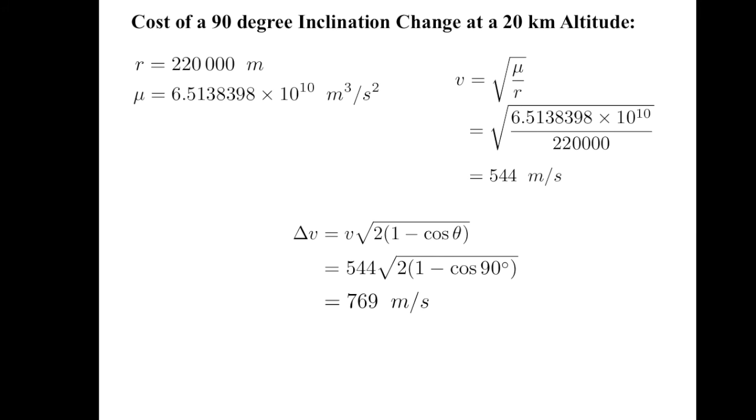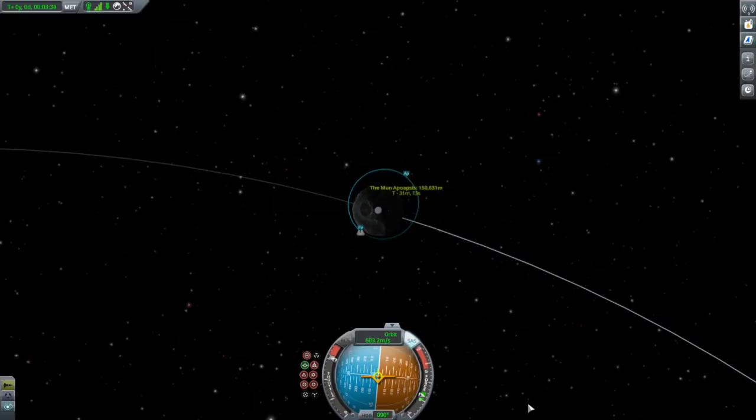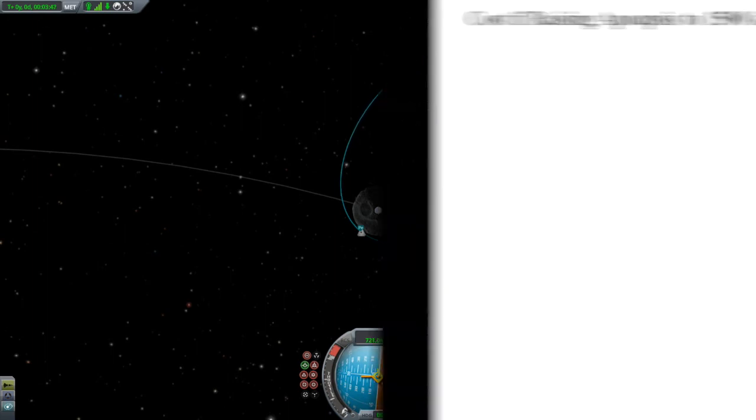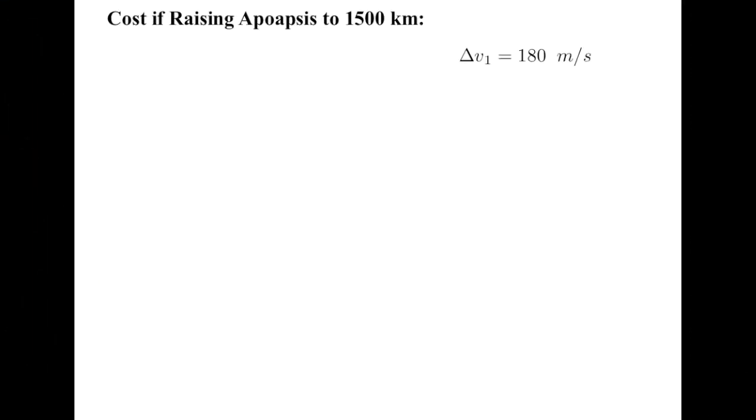However, there is a cheaper way to get what we want. We know that reducing our orbital velocity reduces the cost of an inclination change. To reduce our velocity, we'll raise our apoapsis to 1500 kilometers. By the VisViva equation, this will cost 180 meters per second.